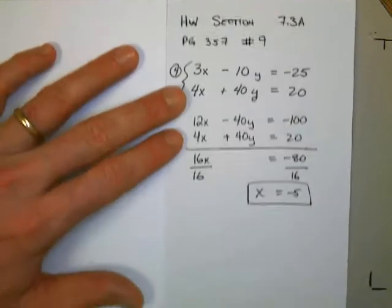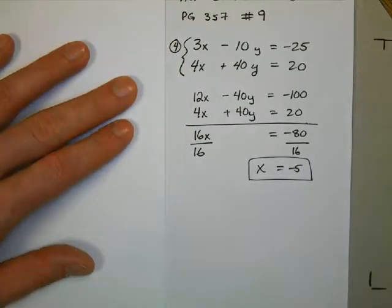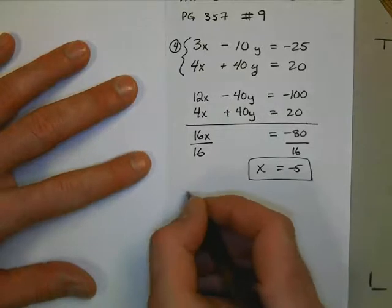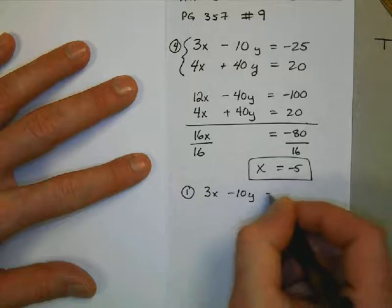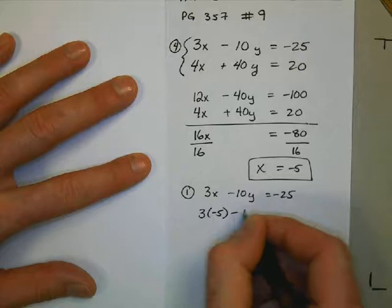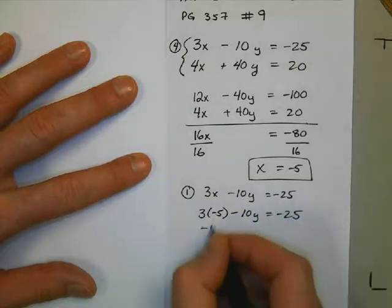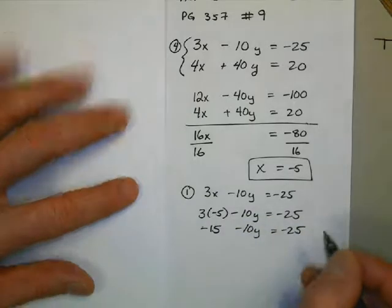I now need to solve for y. When you're solving for y in this kind of scenario, you always want to go back to the original one or two equations to find out your values. I'm going to go back to the first equation, which is 3x minus 10y equals negative 25. x, as we know, equals negative 5 from the previous equation. So that's negative 15 minus 10y equals negative 25.